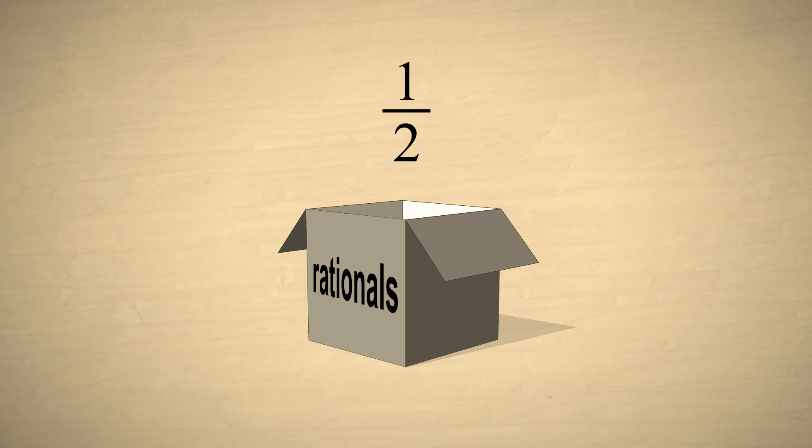In fact, this is where the term rational comes from. Rational number means a number which can be expressed as a ratio.